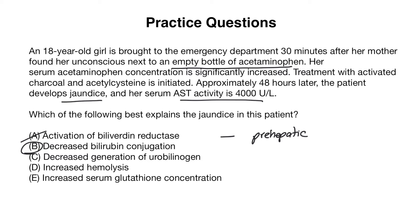Answer choice C is decreased generation of urobilinogen. Urobilinogen is actually formed in the intestine through the help of bacteria found there. We would get decreased generation of urobilinogen if there was some sort of blockage that would not allow conjugated bilirubin to reach the intestine. So this answer choice is referring to a post-hepatic cause of jaundice, and that is why it is incorrect.